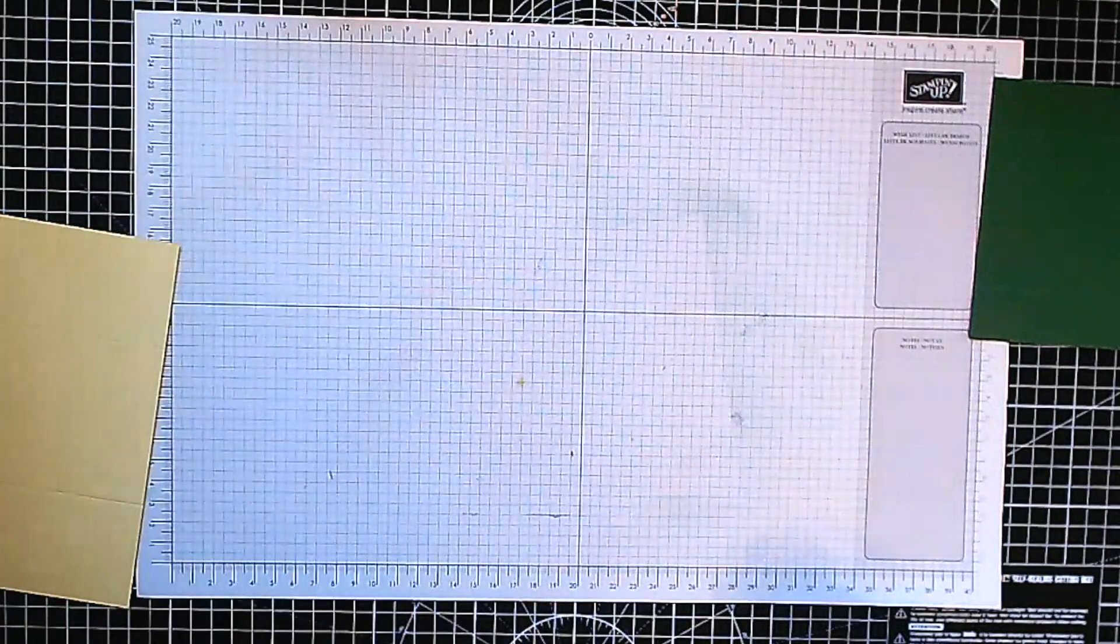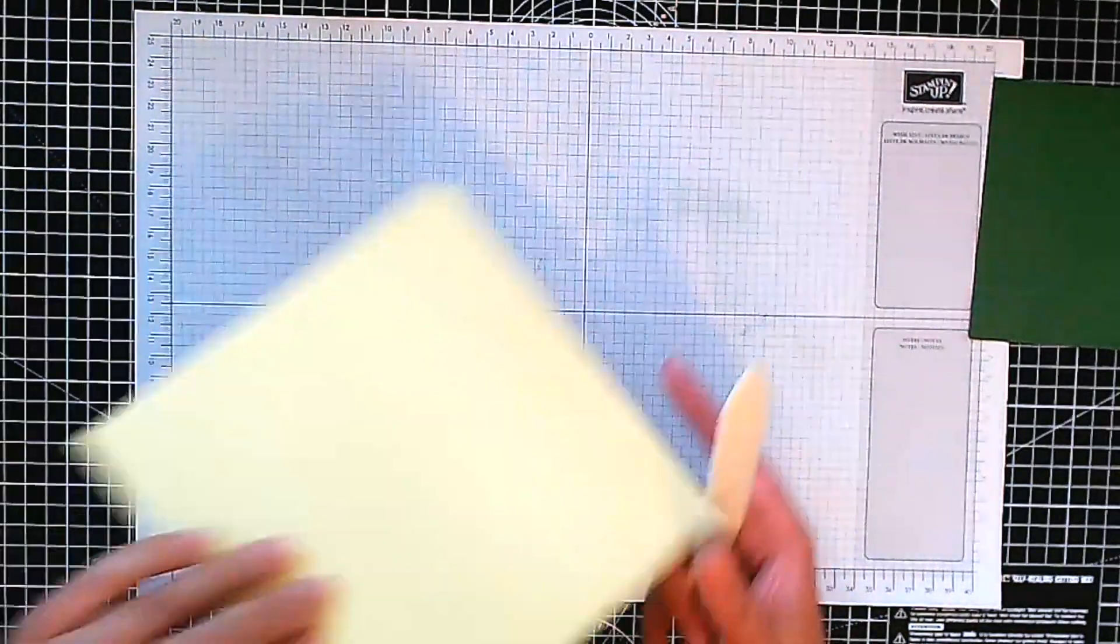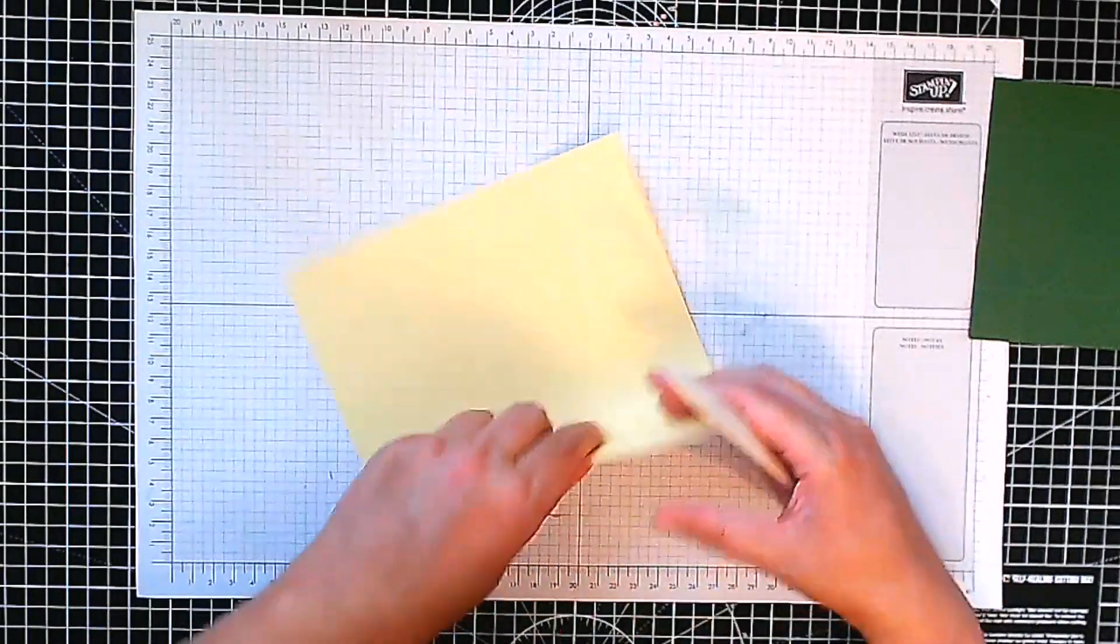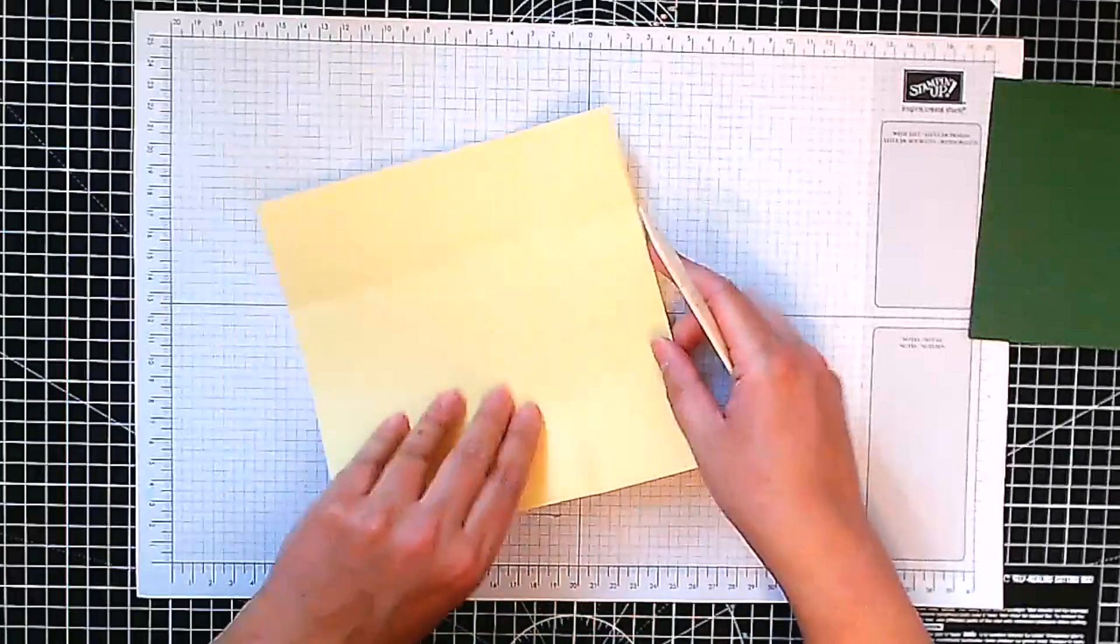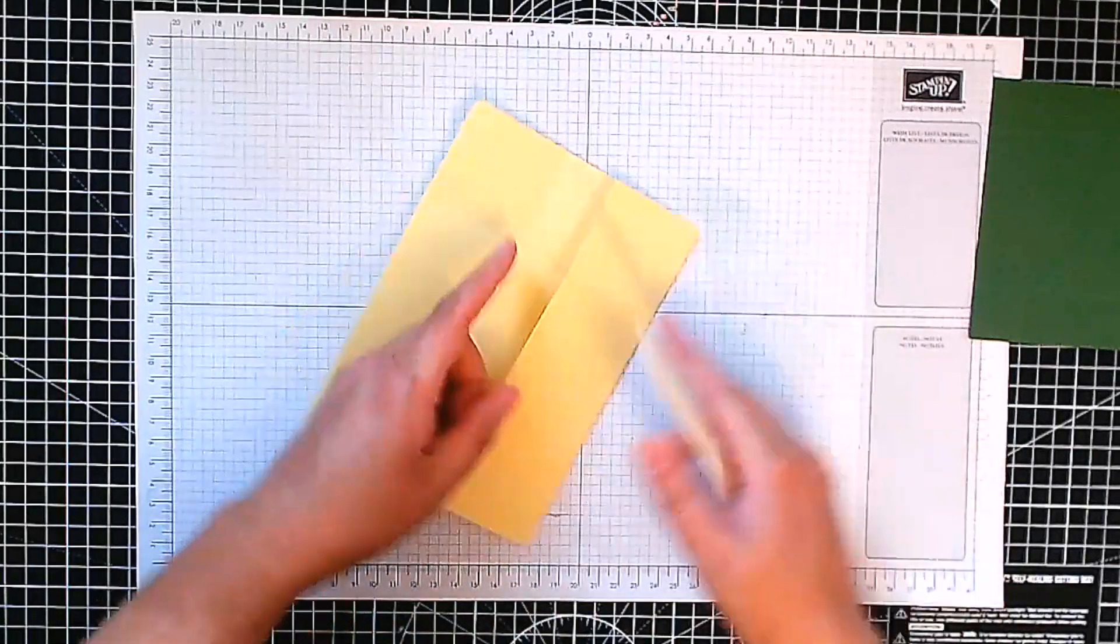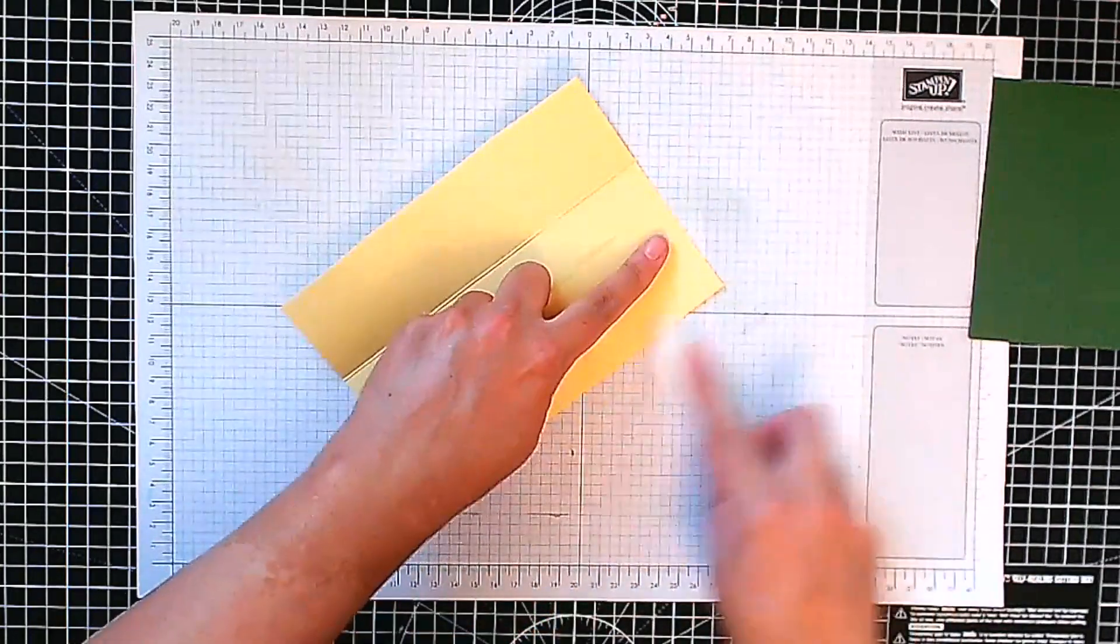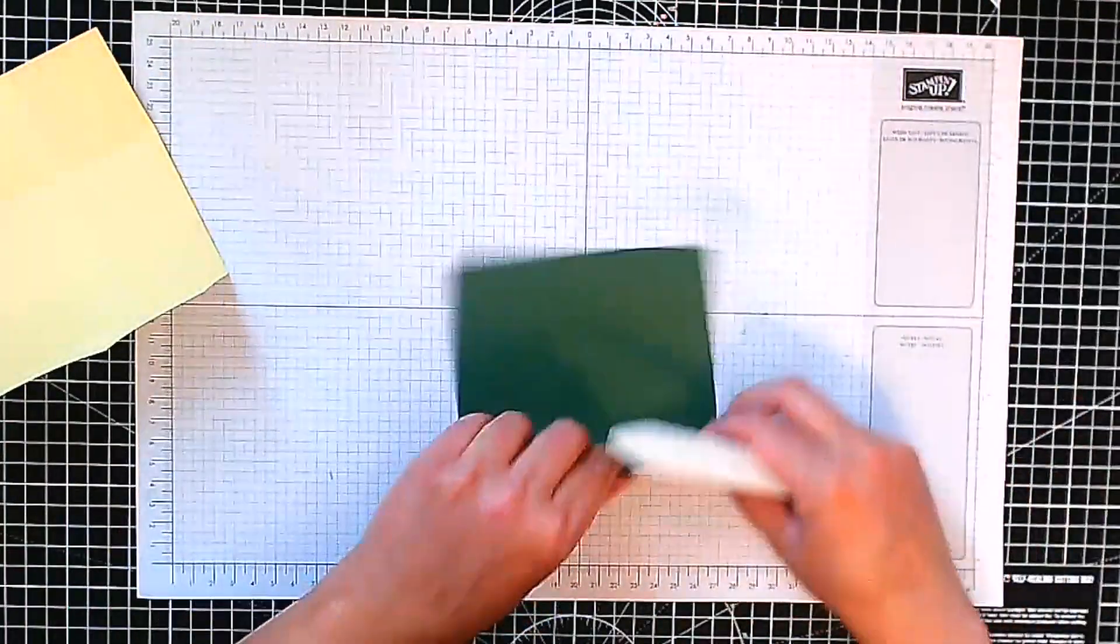So now I'm going to take my bone folder and I'm just going to burnish or fold all the score lines quickly. Do the same for the lid.